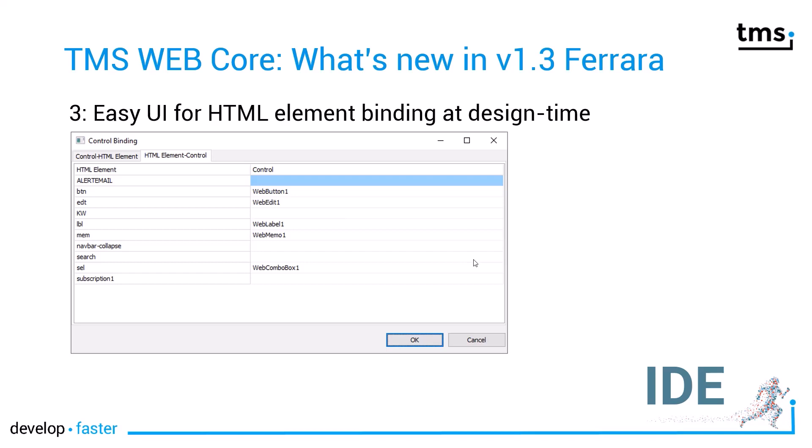With TMS WebCore you have many means to design your forms. One of them is to completely build an HTML design and then link your controls defined in the Delphi Form Designer to these HTML controls using the ID tag. However, it sometimes is clumsy as you forget what you named your ID tags or the list is rather long. The Control Binding dialog makes your life easier — it lists all the IDs in the associated HTML file and lets you link your controls to these HTML ID elements, also preventing you from using the same ID tag for multiple controls.